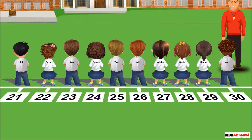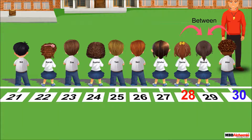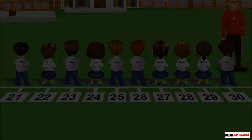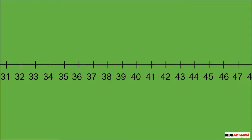Sanya is at number 28 and Alex is at number 30. Raima is standing in between Sanya and Alex. Raima is at number 29, which means 29 comes in between 28 and 30.